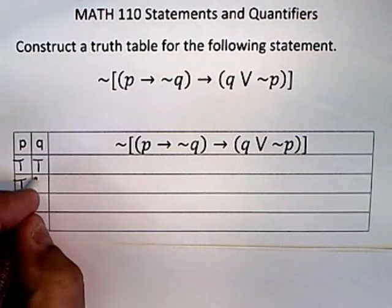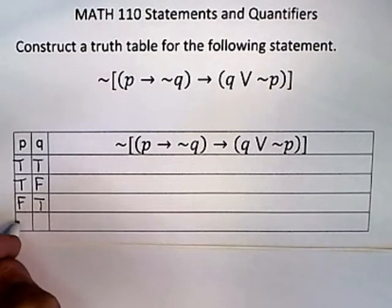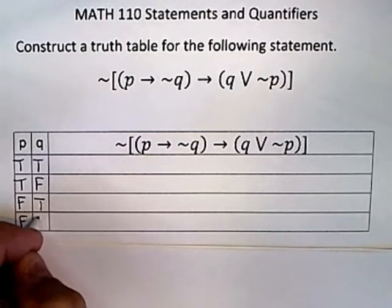The P could be true, the Q could be false, the P could be false, the Q could be true, or they could both be false.